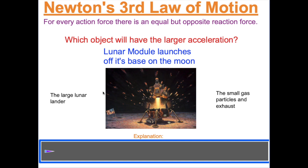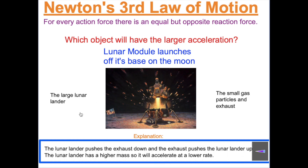When humans first landed on the moon in 1969, two astronauts — Buzz Aldrin and Neil Armstrong — walked on its surface, while Michael Collins orbited in the command service module. To leave the surface, Buzz and Neil used the lower portion of the lunar module as a launch pad, and the upper portion blasted off to rejoin Michael Collins in the CSM and return to Earth. Which would have a larger acceleration: the large lunar lander accelerating upward, or the small gas particles and exhaust accelerating downward? The small gas particles — less mass, higher acceleration. The lunar lander accelerated upward at a lower rate, but it was enough to reach the command service module.